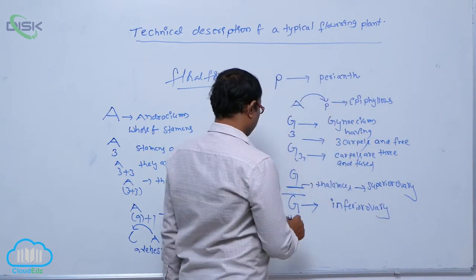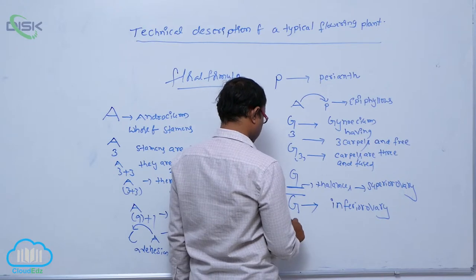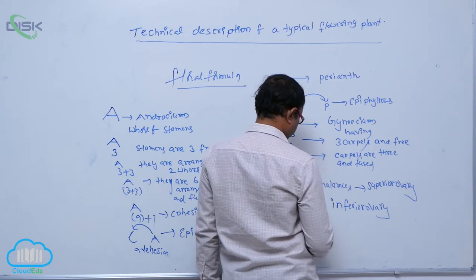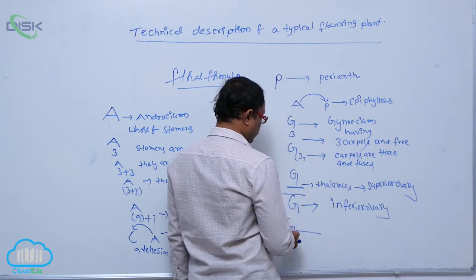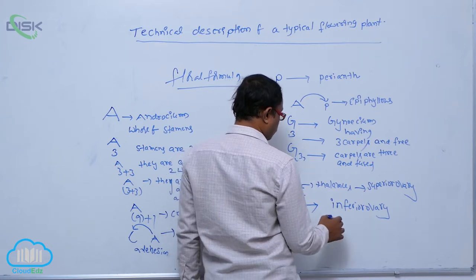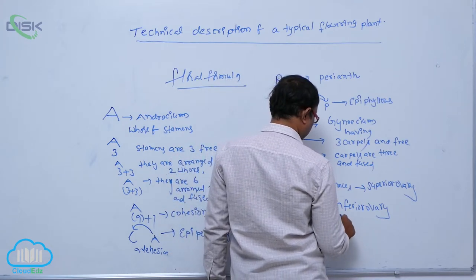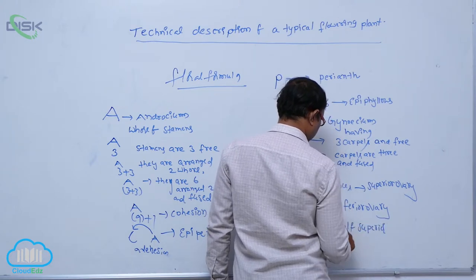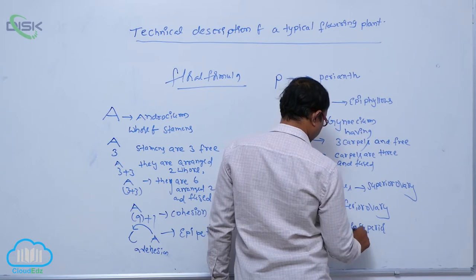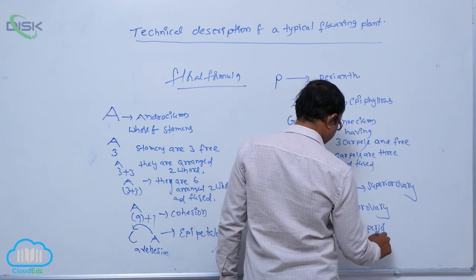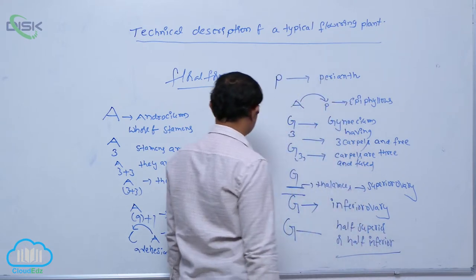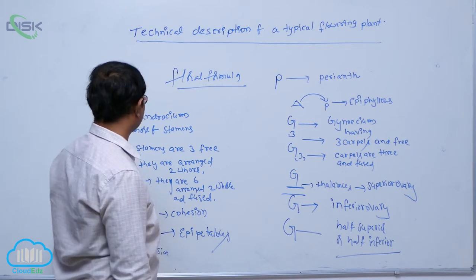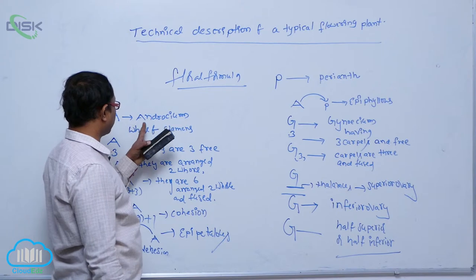If the gynoecium is present below the thalamus, that is an inferior ovary. If the line is present at the center, the thalamus is at the center and the gynoecium is present towards the thalamus at the center, indicating either a superior or inferior condition. This is known as the floral formula.